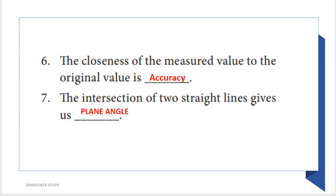Next question: the intersection of two straight lines forms what? Two straight lines intersect to form a plane angle, while two or more planes intersect to form a solid angle. Since just two straight lines are intersecting, the answer is plane angle.